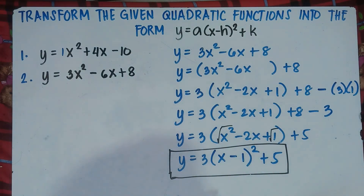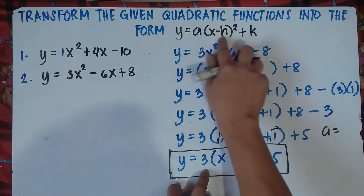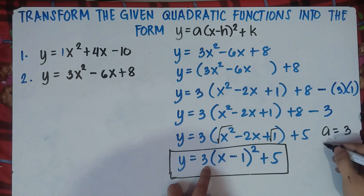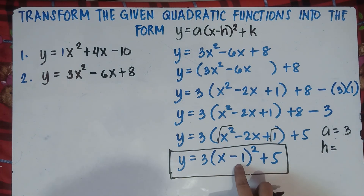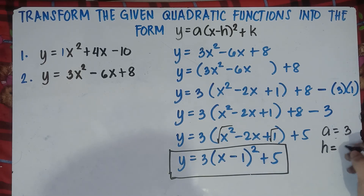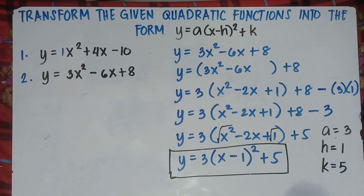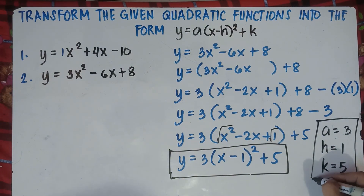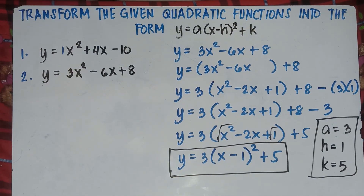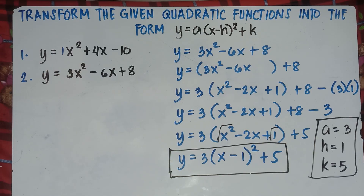So your A is beside the parenthesis — A is 3. Your H is inside the parenthesis: if this is negative 1, you get the additive inverse, so H is positive 1. And your K is the last number — K is positive 5. All set for number 2. That's transforming the given quadratic functions into the vertex form. I hope you like this video — like, share, and subscribe. This is Teacher MJ. Have a great day, class. Goodbye!